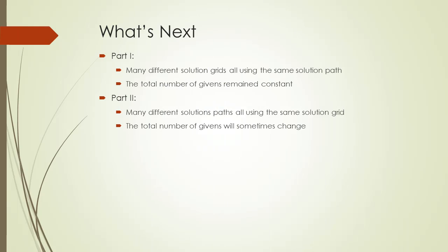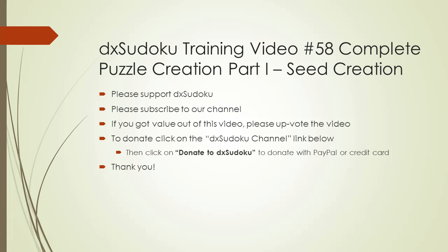In this video, we showed you how to create lots of different solution grids all using the same solution path, with all puzzles using the same number of initial givens each time. In Part 2 of this video series, we will show you how to create many different solution paths all using the same solution grid, and many times the number of initial givens will be changing as we create different solution paths. This completes DxHodoku training video number 58. Please support DxHodoku. Thank you for watching.